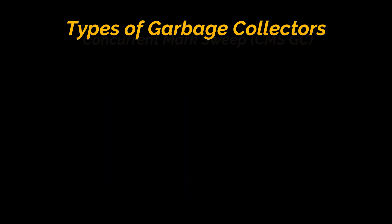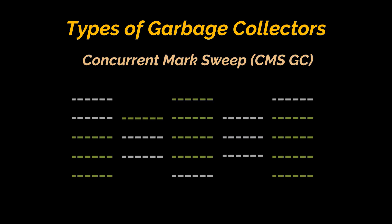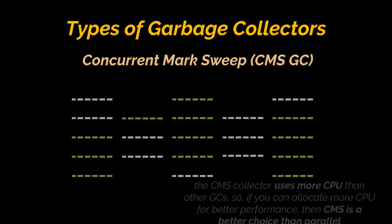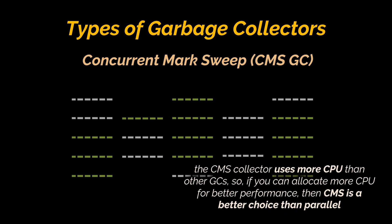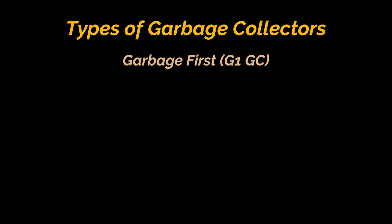Next is the Concurrent Mark Sweep, or CMS GC. Multiple threads are used for both minor and major garbage collection. CMS runs concurrently alongside application processes to minimize stop-the-world events. Because of this, the CMS collector uses more CPU than other GCs — so if you can allocate more CPU for better performance, the CMS garbage collector is a better choice than the Parallel collector.